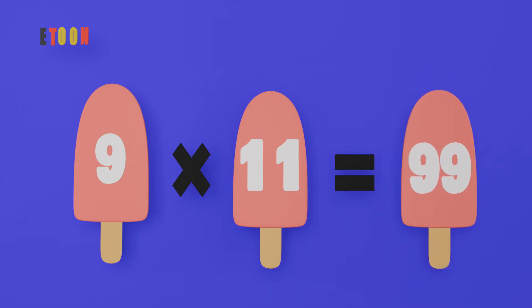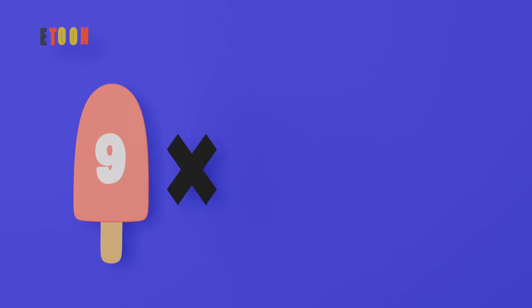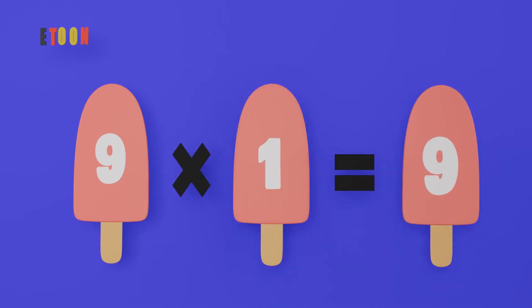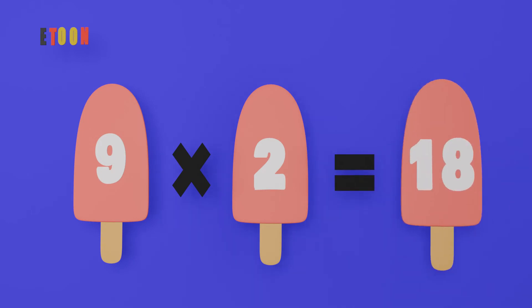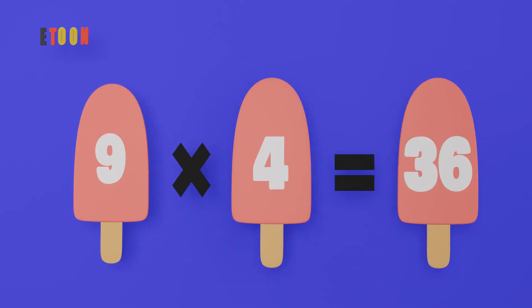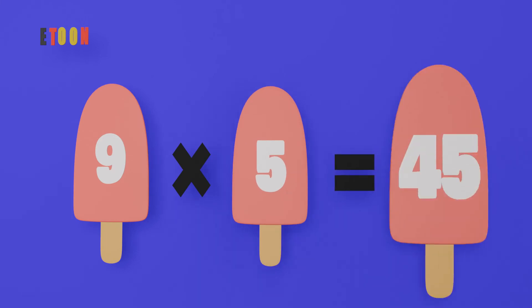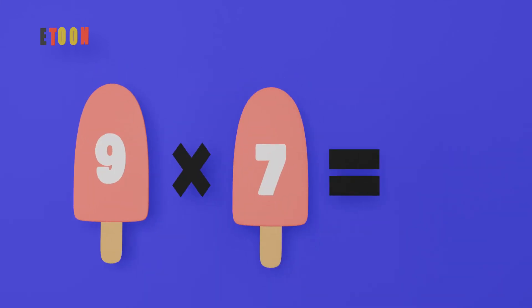9 times 12 is 108. 9 times 1 is 9, 9 times 2 is 18, 9 times 3 is 27, 9 times 4 is 36, 9 times 5 is 45, 9 times 6 is 54, 9 times 7 is 63.